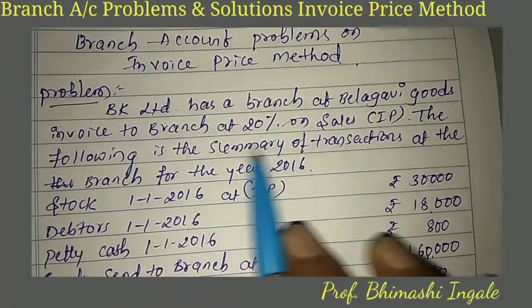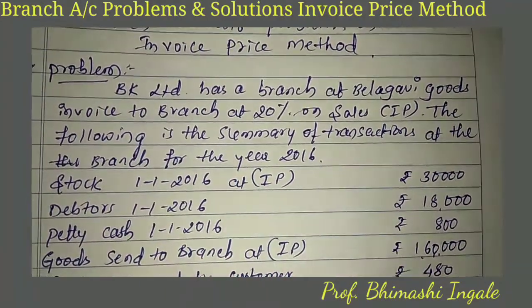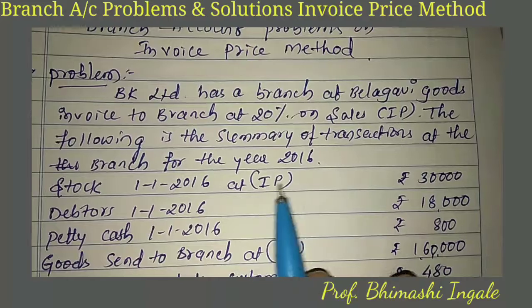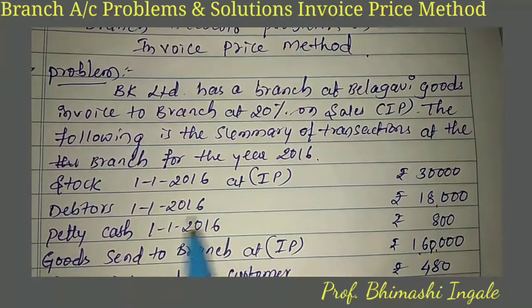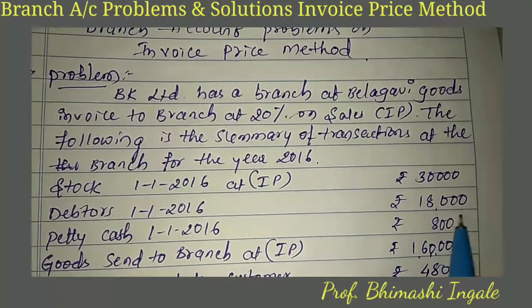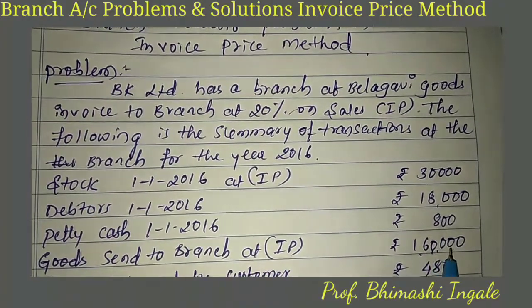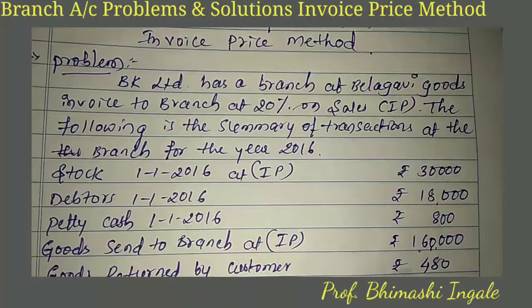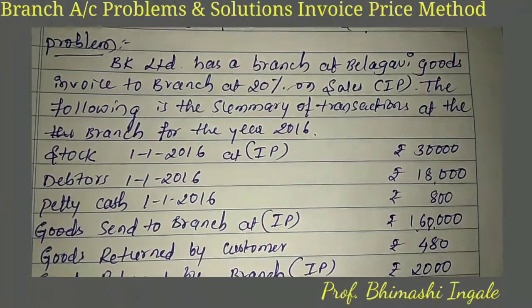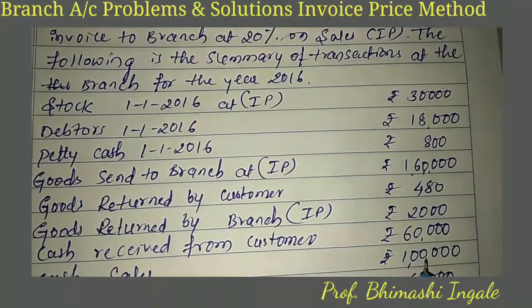The following is a summary of transactions at the branch for the year 2016. Stock on 1-1-2016 at invoice price: 30,000. Debtors on 1-1-2016: 18,000. Petty cash on 1-1-2016: 800. Goods sent to branch at invoice price: 1,60,000. Goods returned by customer: 480. Goods returned by branch at IP: 2,000.